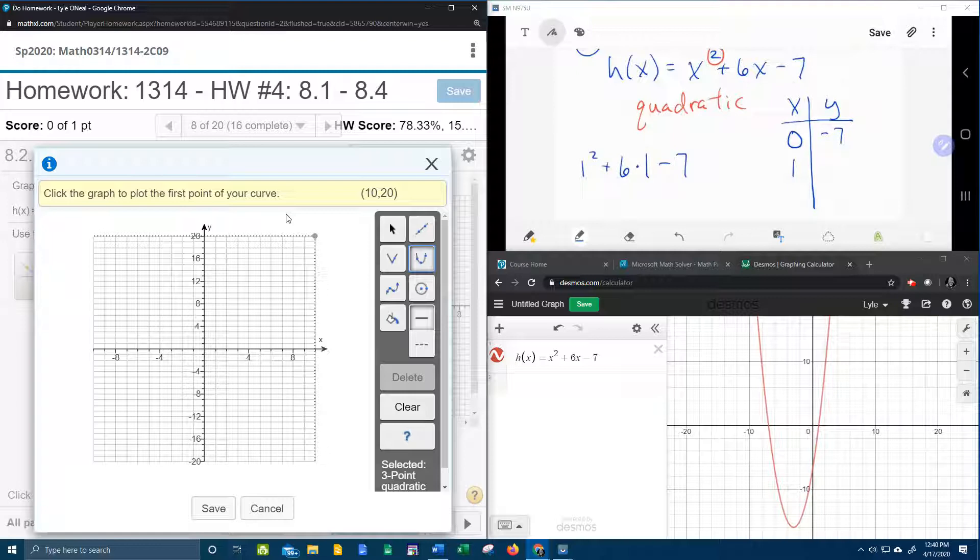I'm going to actually plug the 1 in for every x and work that out, and that's going to be 7 minus 7, that's going to be 0, and use a calculator if you need to.